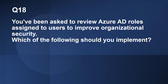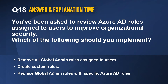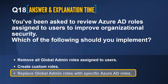Question number 18. You have been asked to review Azure AD roles assigned to users to improve organizational security. Which of the following should you implement? The options are: remove all global admin roles assigned to users; create custom roles; and replace global admin roles with specific Azure AD roles. The correct answer is replace global admin roles with specific Azure AD roles. By following the least-privileged security model and assigning specific admin roles — such as billing administrator or user administrator — instead of global admin roles, you can improve organizational security.